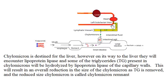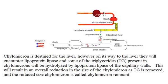A chylomicron, once it enters the circulation, will end up in the heart and will eventually end up in the liver. However, as it's transported through the blood vessels, it will encounter lipoprotein lipase, which will digest or remove some of the triglycerides from this chylomicron. Consequently, the size of the chylomicron will become smaller, and that smaller chylomicron will end up in the liver. So as it moves through this process, some of the fatty acids are removed from it.